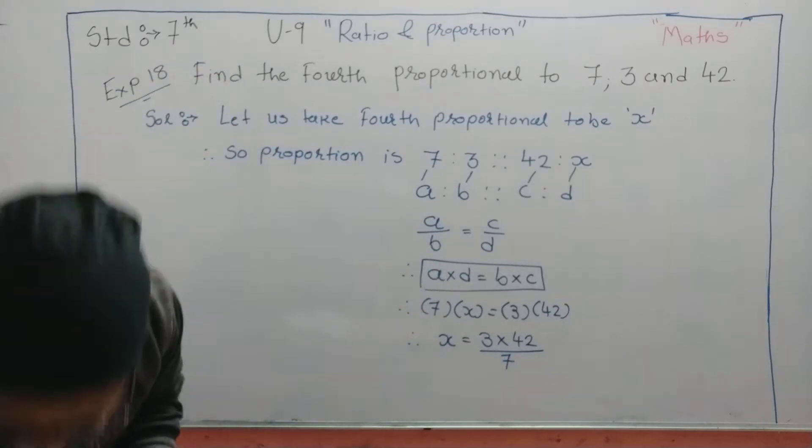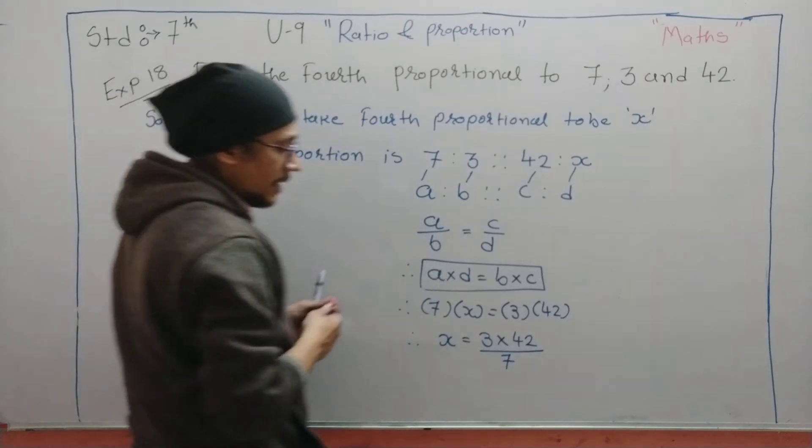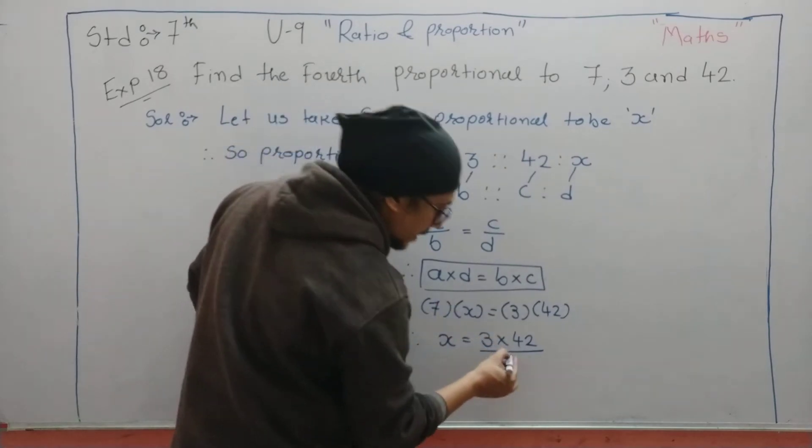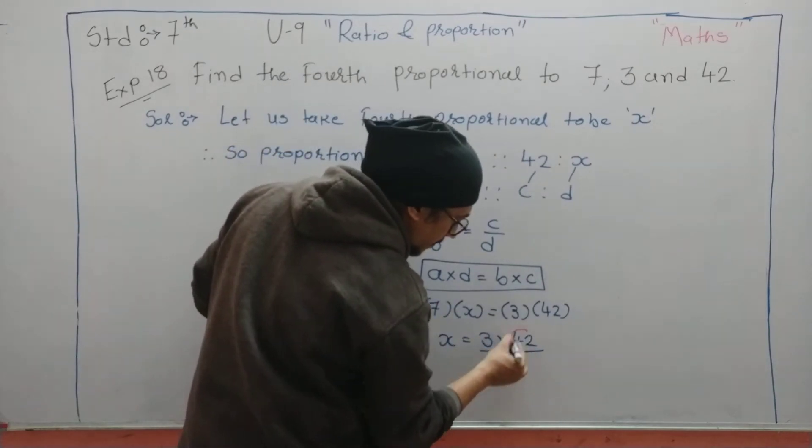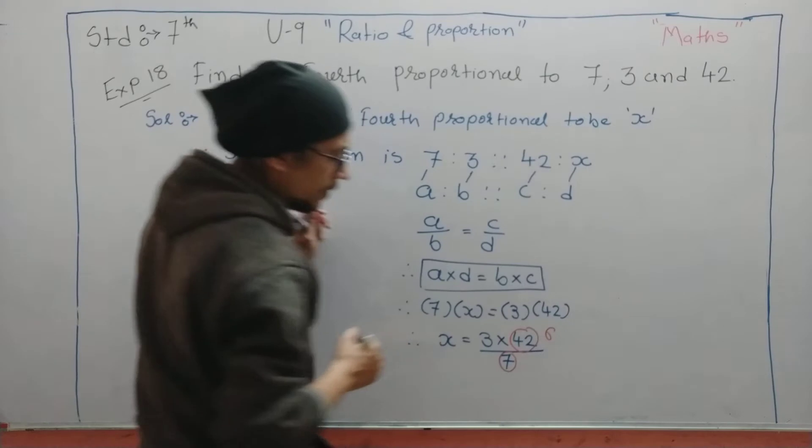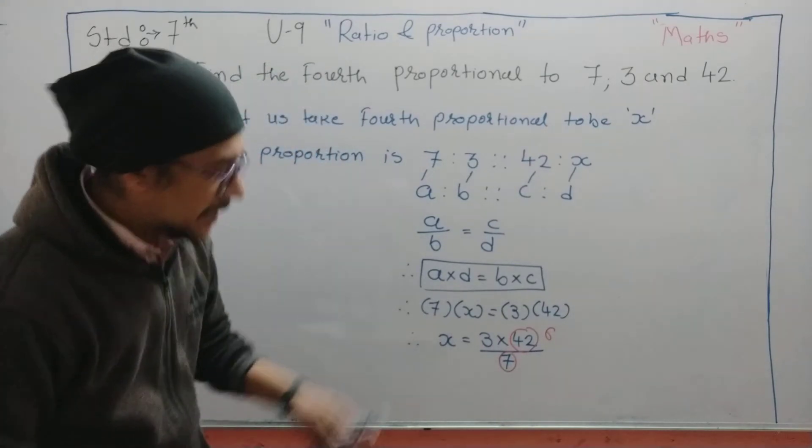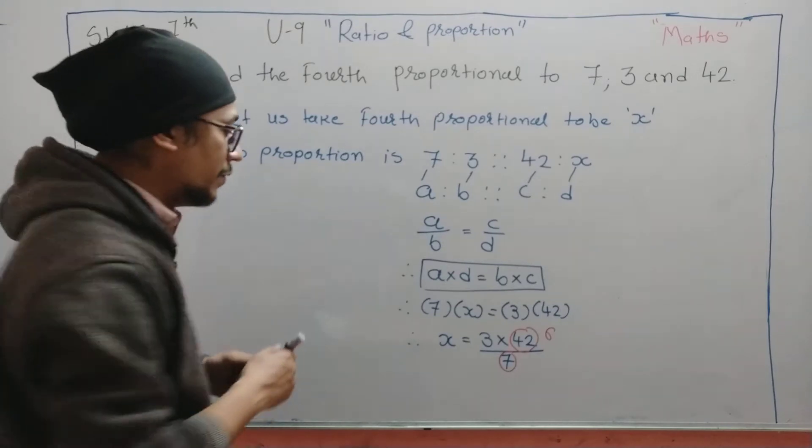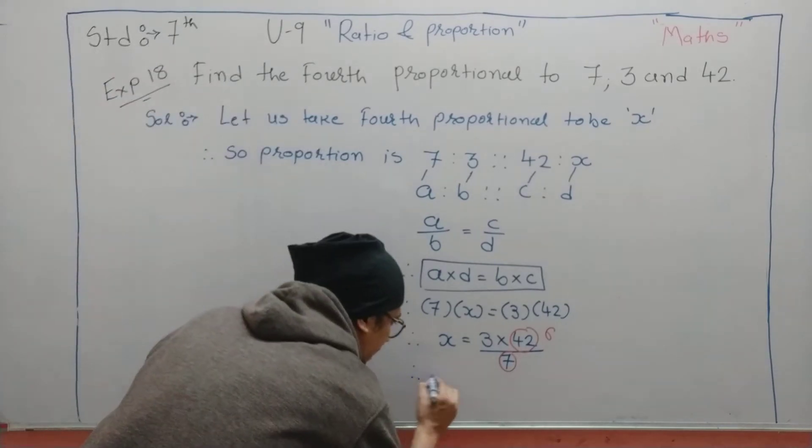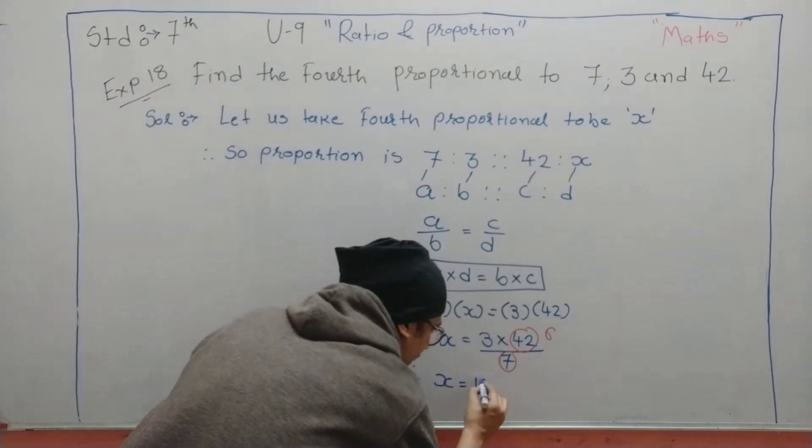We know 7 and 42 have a deep relationship which is 7 times 6 equals 42. And 3 into 6 will be equal to 18. So x is equal to 18.